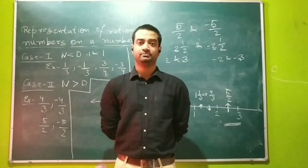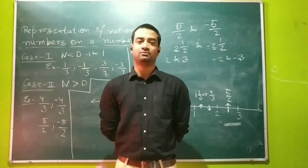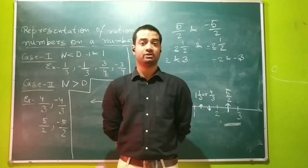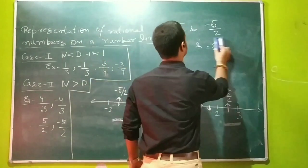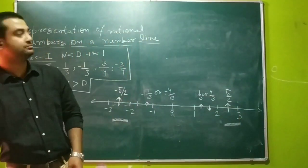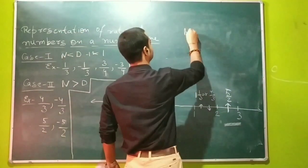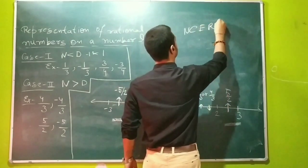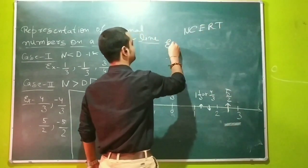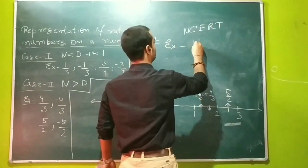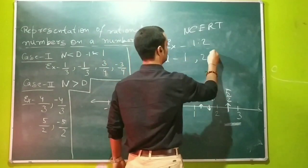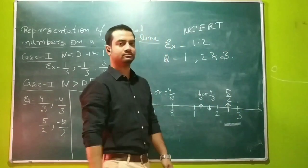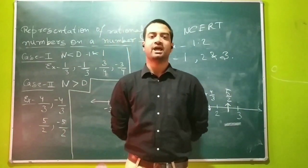I hope you have understood how to draw rational numbers on the number line. If you still have any doubts, please write to me. Your homework from your NCERT book is exercise 1.2, questions 1, 2, and 3. Thank you and Jai!